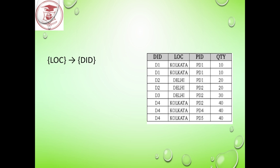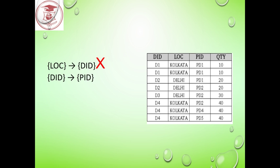Now we check whether location functionally determines d_id or not. Considering the second row and the sixth row, for the same location value we have two different d_id values — d1 and d4. So location cannot functionally determine d_id.